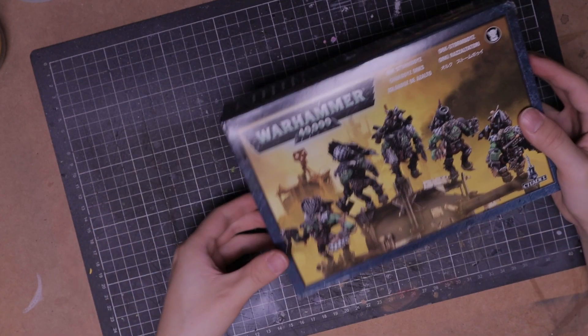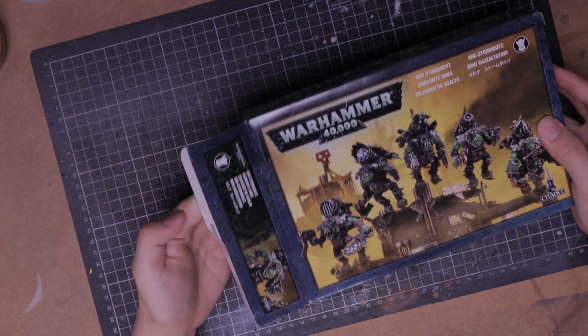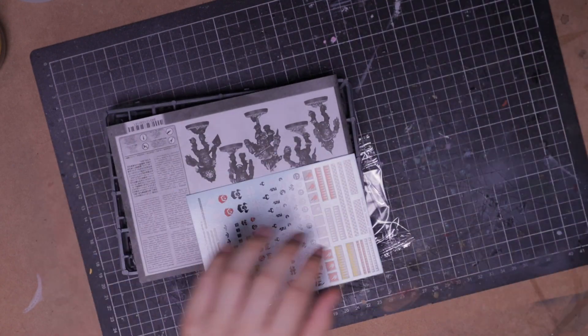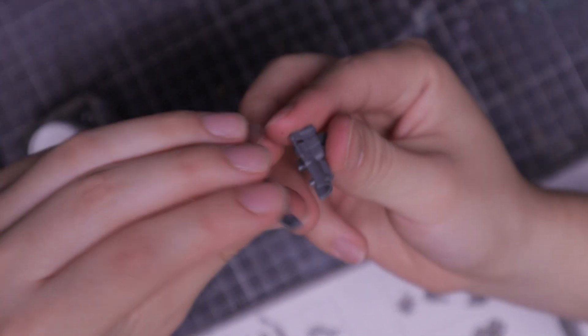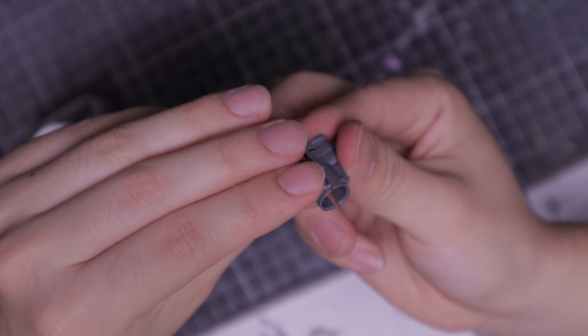Before I can paint, I need to build the Orcs. Here's a little unboxing action for you. Cut out the parts and give them a clean. This is my first time building Orcs, so I'm unfamiliar with how the parts come together.